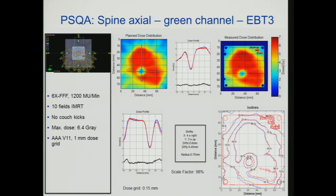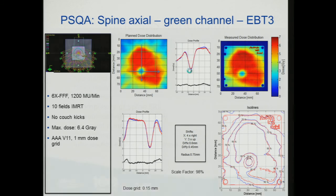Film dosimetry is personally the best QA approach for spine radiosurgery because the dose gradient is so sharp that regular 2D arrays cannot capture the dose drop-off. We measure in the axial plane to evaluate dose drop-off from the spine — especially for donut cases where the tumor wraps around the cord. In conclusion, there is significant clinical benefit from spine radiosurgery: neurological improvement, rapid pain control, and non-invasive procedure. But there is a lot of complexity including immobilization, treatment planning accuracy, QA challenges, and intra-fractional motion management. A good plan on a static phantom does not guarantee good delivery on a patient.